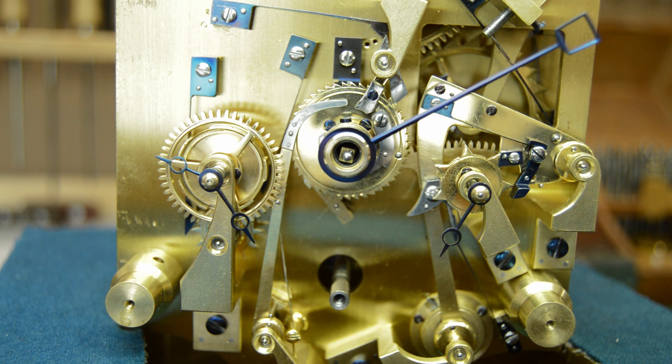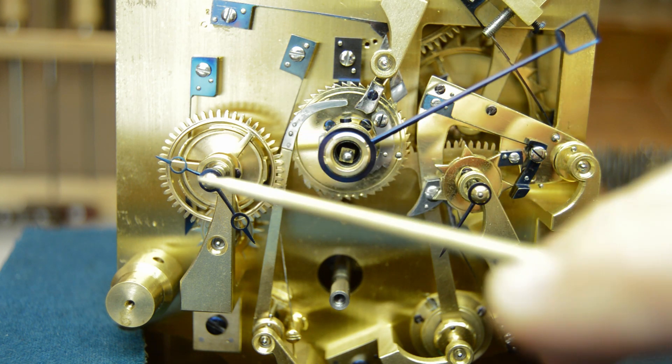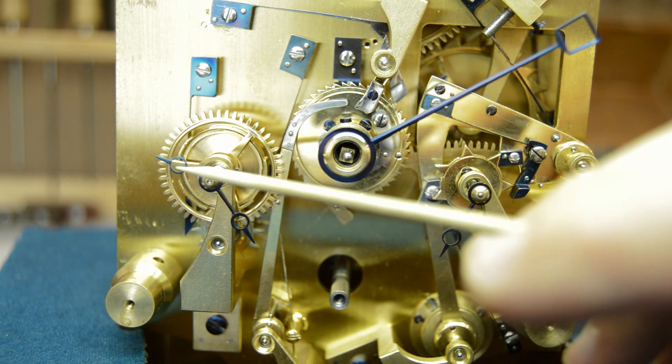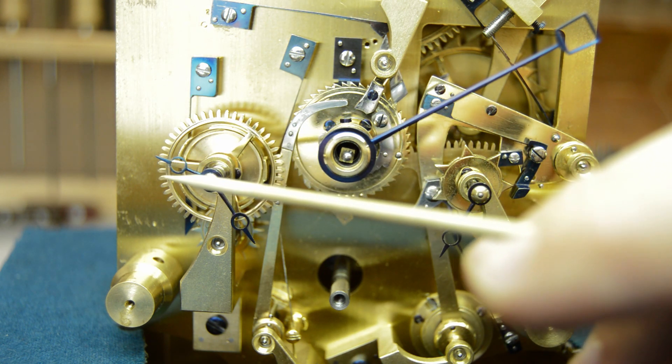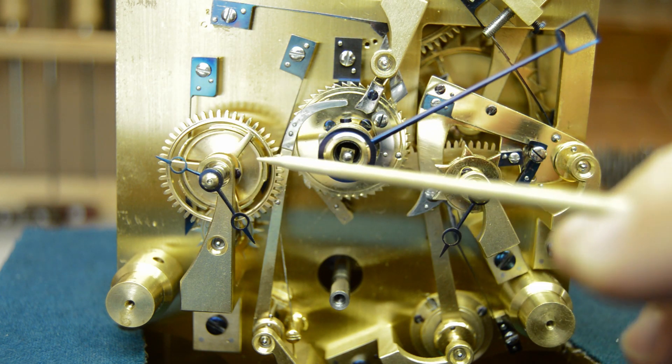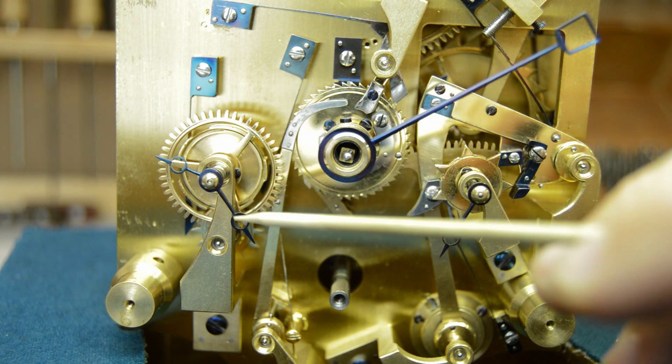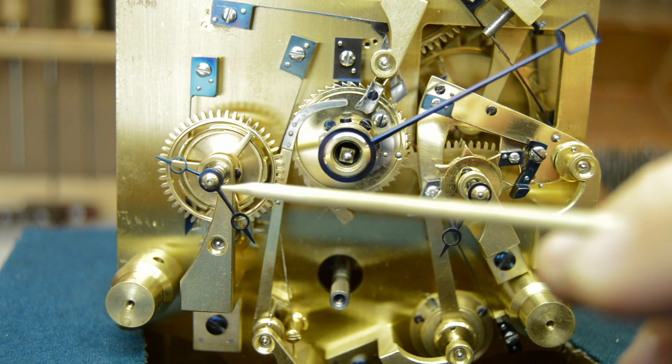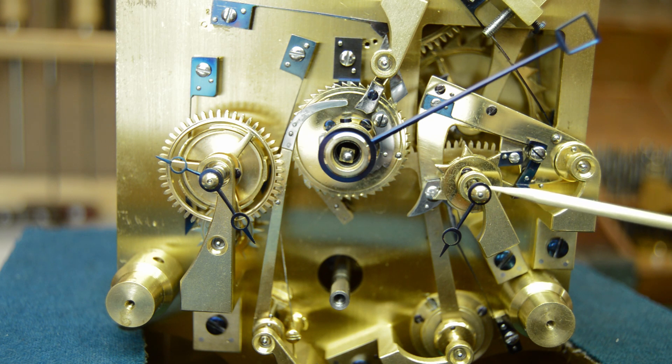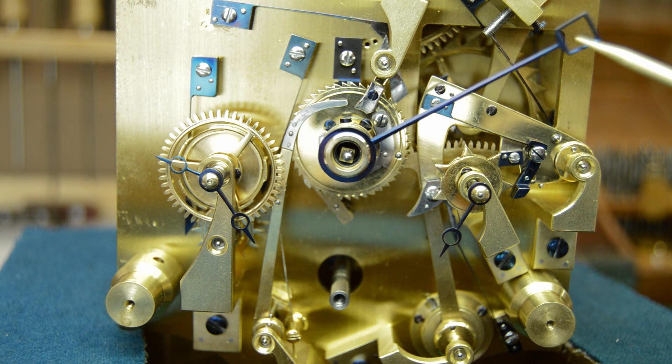So the overview of the system is such: over here you've got two hands concentric to each other. The smaller hand here is telling you which part of the four-year cycle of the leap year you're in. The hand above it is the month of the year. You've got the hand down here which is the day of the week, and then you've got this large hand here with this square aperture through which you would read the date.